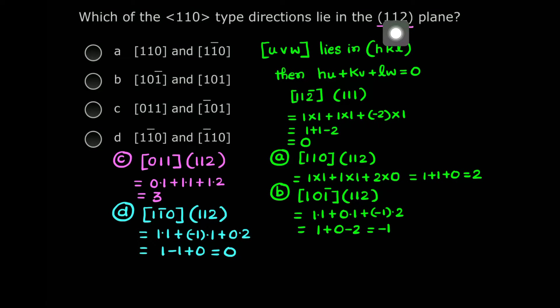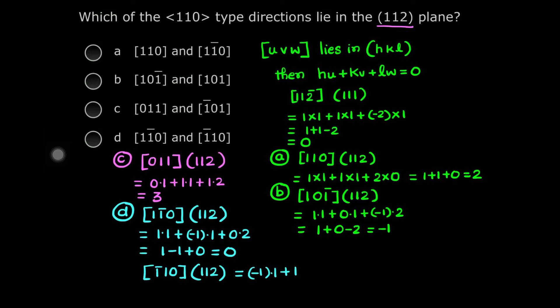Let's also check the direction [1̄ 1̄ 0] with the plane (1 1 2). Taking the dot product: (−1)×1 + (−1)×1 + 0×2 = −1 + (−1) + 0. Wait — actually it is (−1)×1 + 1×1 + 0×2 = −1 + 1 + 0 = 0. So we get a dot product of 0 in both cases, meaning both directions lie in that plane.